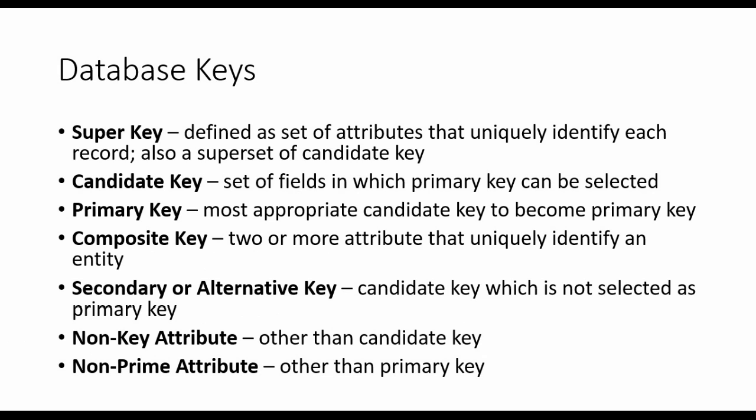So this is a hierarchy: a super key is a superset of candidate key. A candidate key is a set of fields from which the primary key can be selected. The primary key is the unique key which identifies an entity in a table. A composite key is when two or more attributes form a primary key. The alternative key is everything in the candidate key set other than the primary key. A non-key attribute is any attribute not selected as a candidate key.